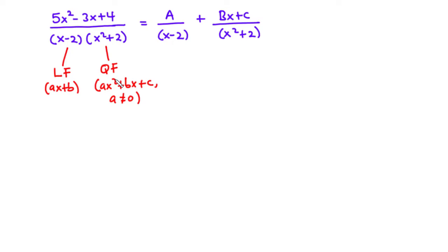Now if the denominator of a rational function is made up of a linear factor and a quadratic factor, then when decomposing this rational function into partial fractions, the numerator of the linear factor is a constant represented by A, and the numerator of the quadratic factor is linear, represented by Bx plus C.